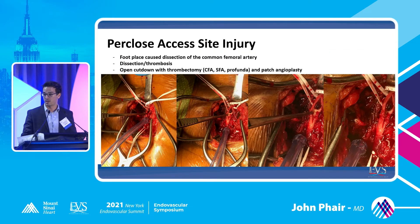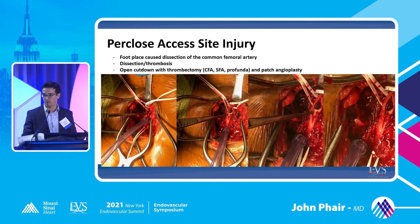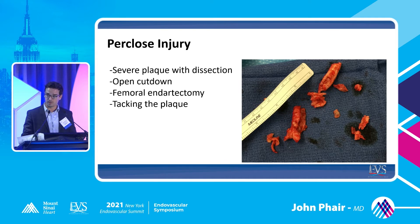You could also have access site complications at the actual access site without embolization distally. This is a per-close footplate dissection in the common femoral artery, which caused dissection and thrombosis. In the second picture, you see that dissection flap, and immediately superior to that, you see the clot. This is treated with thrombectomy of the common femoral artery, SFA, profunda, and patch angioplasty. The patients at highest risk have severe disease in the common femoral artery, so ultrasound guided access is important. When you do deal with the complications, cut down is required and you have to take all that plaque out — otherwise you're closing on a diseased vessel and it'll close off with raw surfaces aggregating thrombus.